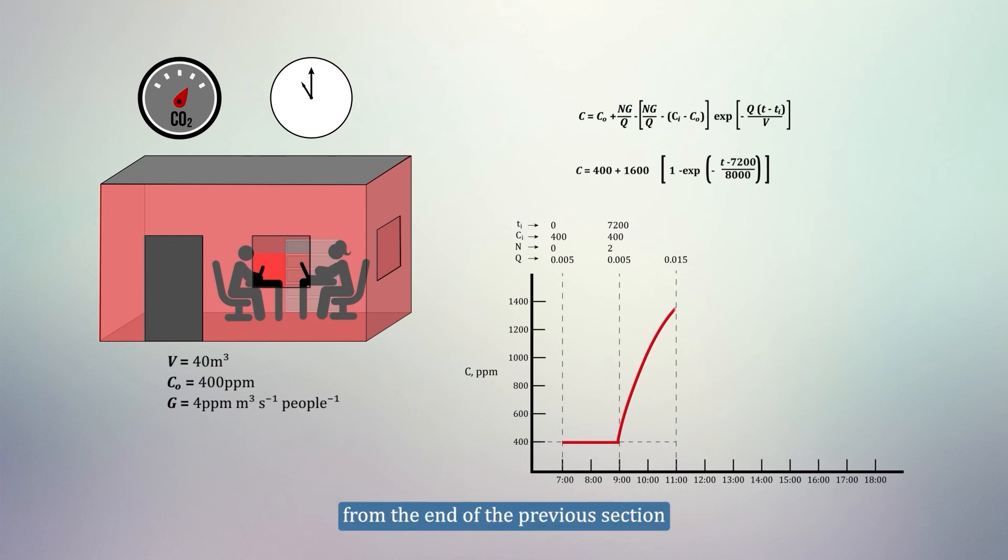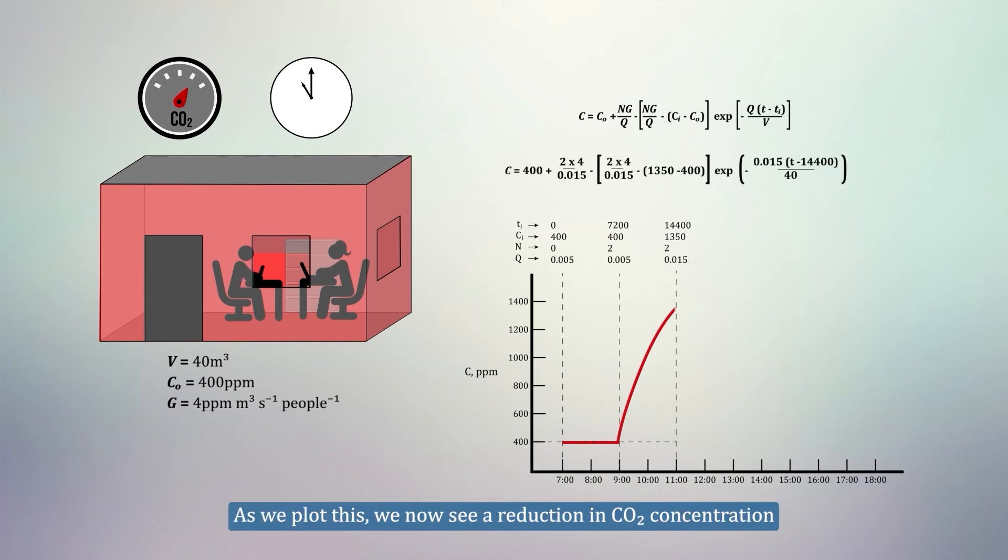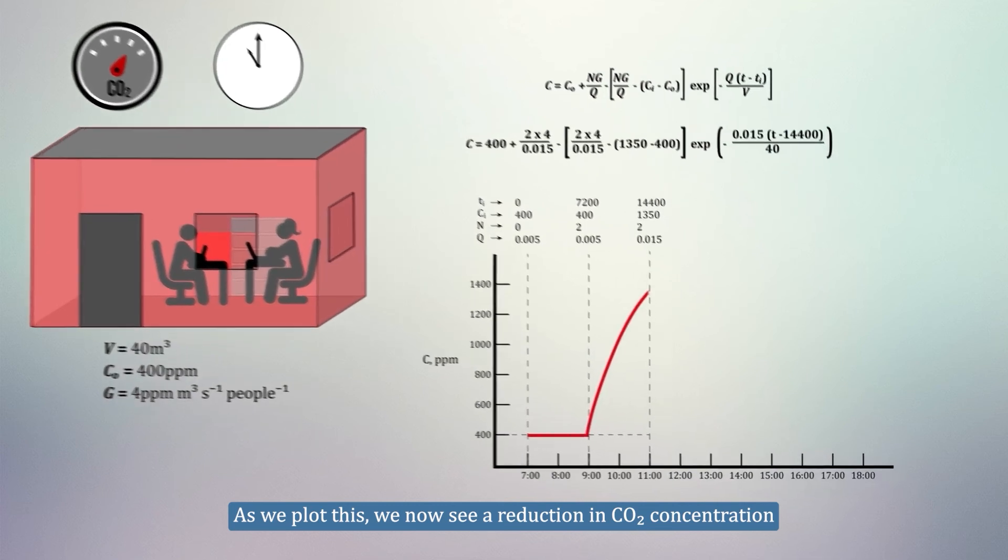Like before, we take the initial conditions from the end of the previous section, so Ti becomes 4 hours, or 14400 seconds, and Ci is updated to 1350 ppm. Again, we substitute these values into our equation to get a new expression. As we plot this, we now see a reduction in CO2 concentration.